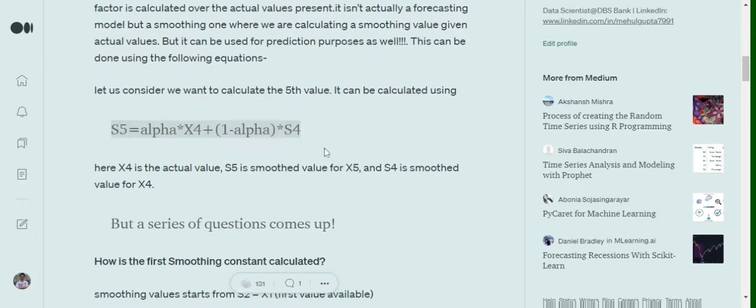So how to calculate that? We have a formula for that. That is S(x) = alpha × X(x-1) + (1-alpha) × S(x-1).